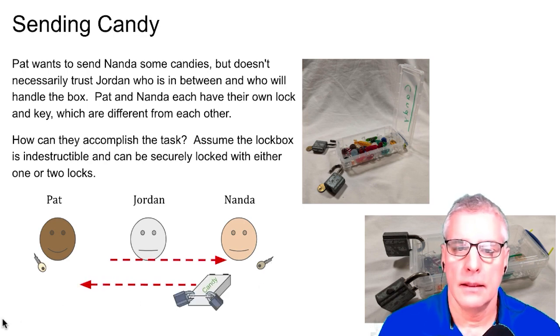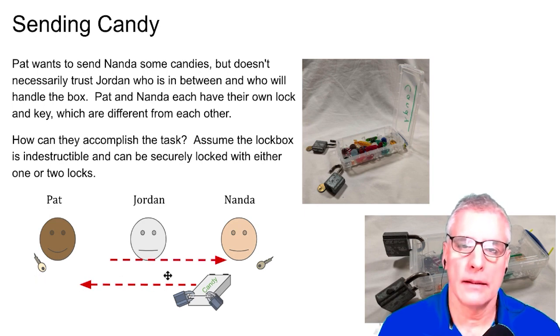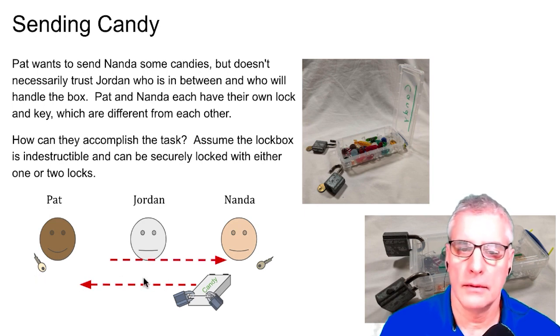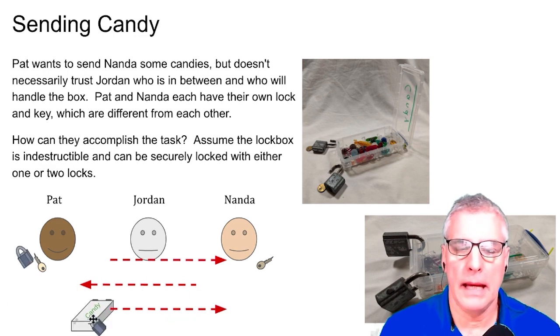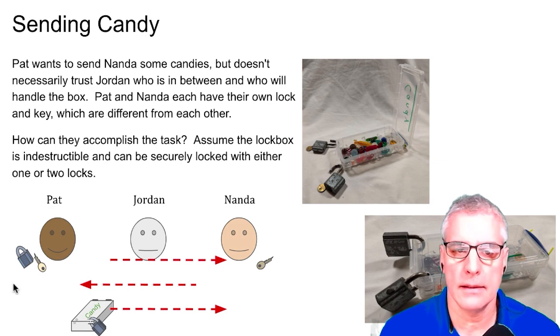Well, then Nanda takes and puts Nanda's lock on it and sends it back. Jordan gets it. Now, there's two locks on it. Even worse, can't get to the candy inside. Pat then receives it. And once Pat receives it, Pat takes Pat's lock off, but it still has Nanda's lock on it, and sends it back through. Jordan still can't get at it because Nanda's lock is on there.